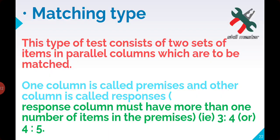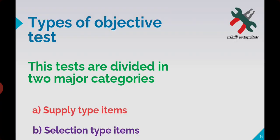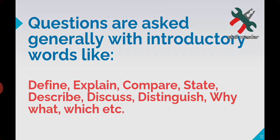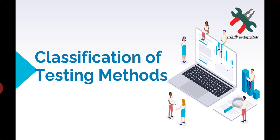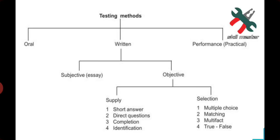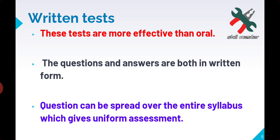So this is much for our today's class. Let us quickly revise all important points. The next topic will be three levels of question complexity. We covered oral, written, and performance tests. Oral test: simple series of questions — both question and answer are verbal. Written test: both question and answer remain in written form — more effective than oral, and the record can be maintained.